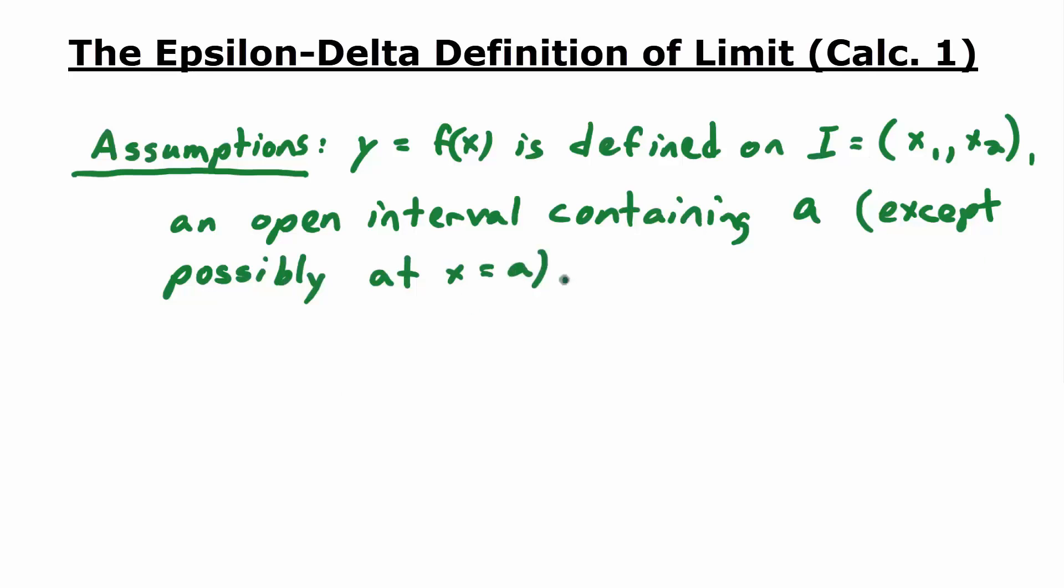So here's the definition. We'll say this. The limit of f of x, as x approaches A, is equal to L, if for all epsilon greater than zero, there is a delta greater than zero, such that, so delta is a number, epsilon's a number, delta greater than zero, such that